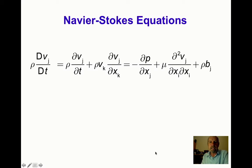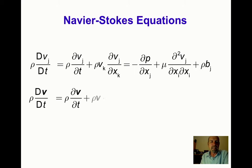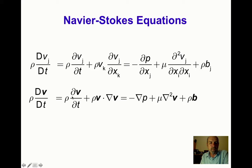We can also write this in direct notation as: rho dV/dt, which expands to rho del V / del t plus rho (V dot grad) V, equals minus grad p plus mu Laplacian V plus rho times b.